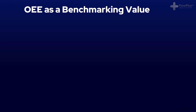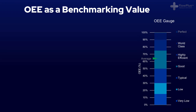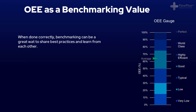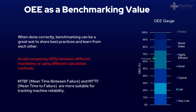Finally, before we summarise, we'll briefly talk about using OEE as a benchmarking value. Companies love to compare themselves to best-in-class competition, or even internally between different departments. If done correctly, it can be a great way to share best practices and learn from each other. But stay clear from comparing OEEs between different machinery or using different calculation methods — different equipment has different requirements and outputs. OEE can be measured for each machine to track improvements in reliability and equipment effectiveness, but if that's your sole intention, reliability stats like mean time between failure would probably be more suitable.